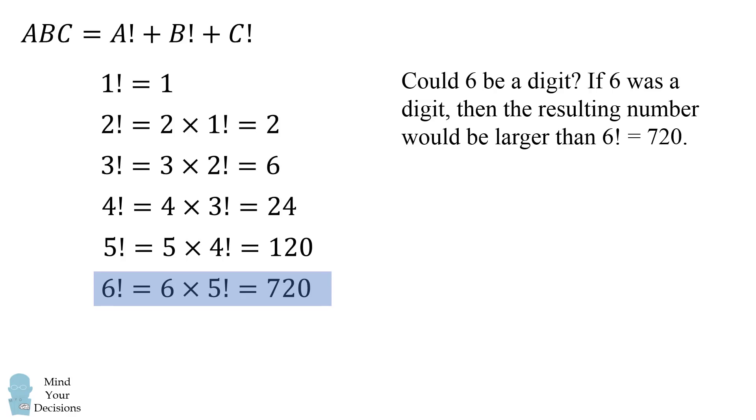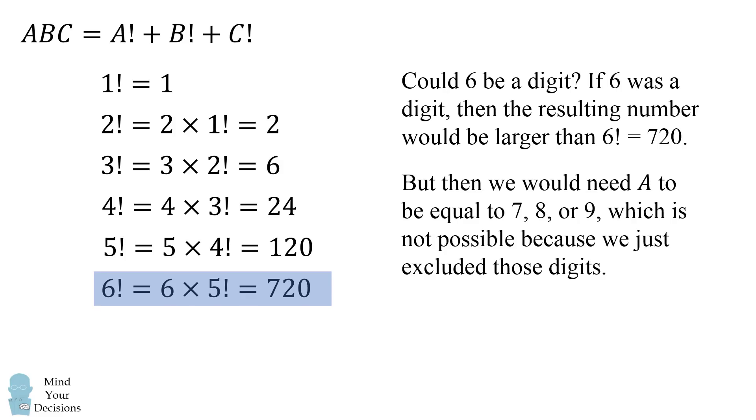Now consider could six be a digit? Well if six was a digit then the resulting number would be larger than six factorial which equals 720. But then we would need A to be equal to seven, eight or nine, which is not possible because we just excluded those digits.